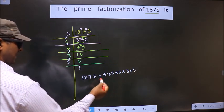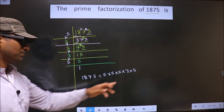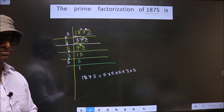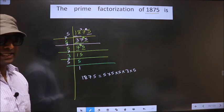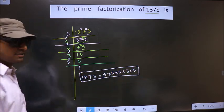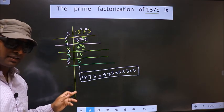So, this is the prime factorization of 1875. This also called as product of prime numbers of 1875. So, this is our answer. Am I clear?